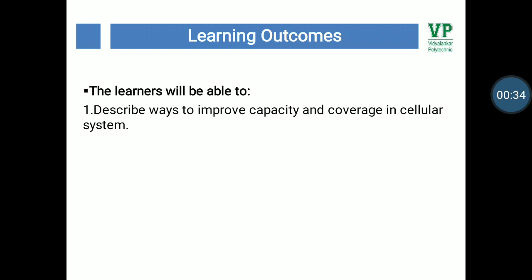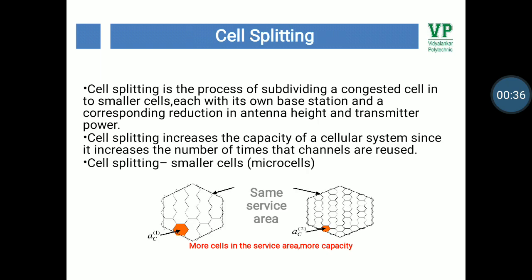Cell splitting is the process of subdividing a congested cell into smaller cells, each with its own base station and a corresponding reduction in antenna height and transmitter power. Cell splitting increases the capacity of a cellular system since it increases the number of times that channels are reused.